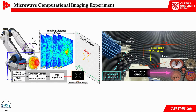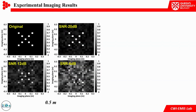We validate our design through imaging experiments. Using the fabricated FDBMA as a transmitter and a probe as a receiver, we place an X-shaped target in the imaging plane. The experiments have three parts. First, we validate that the SNR of the detected signal has an impact on the quality of reconstructed images.